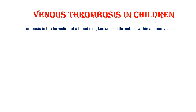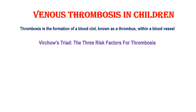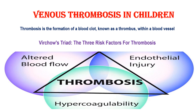Venous Thrombosis in Children. Thrombosis is the formation of blood clots, known as thrombus, within a blood vessel. Virchow's triad describes three broad categories of factors that are thought to contribute to thrombus. It is named after the renowned German physician Rudolf Virchow. Those three components are altered blood flow, endothelial injury, and hypercoagulability.